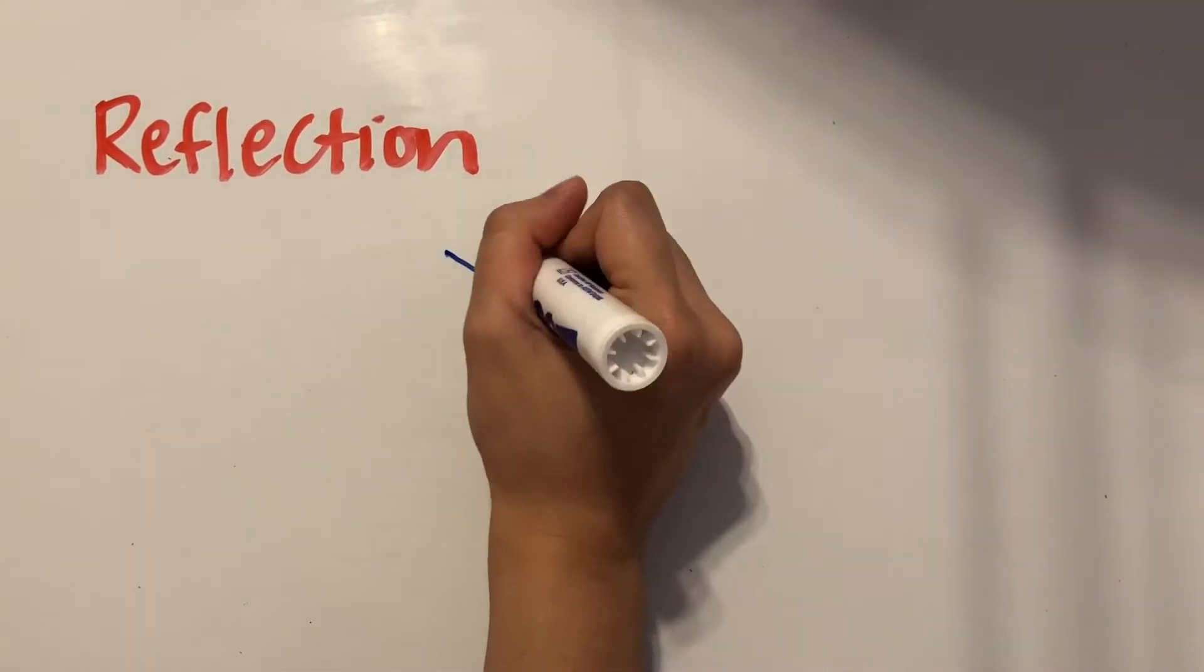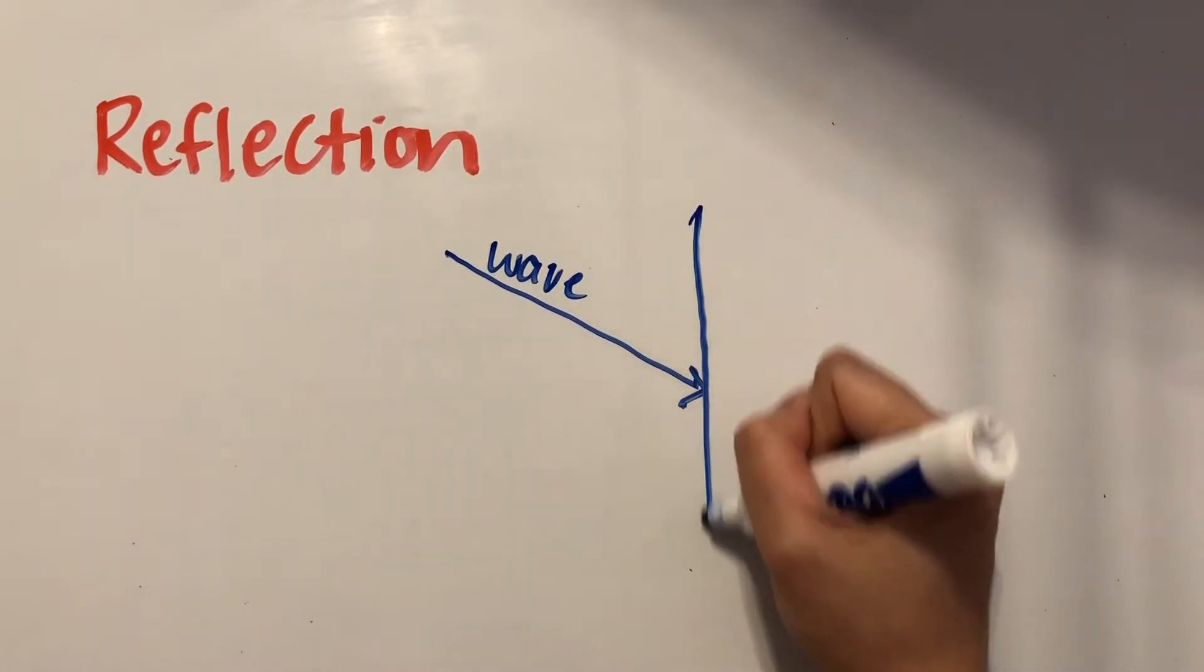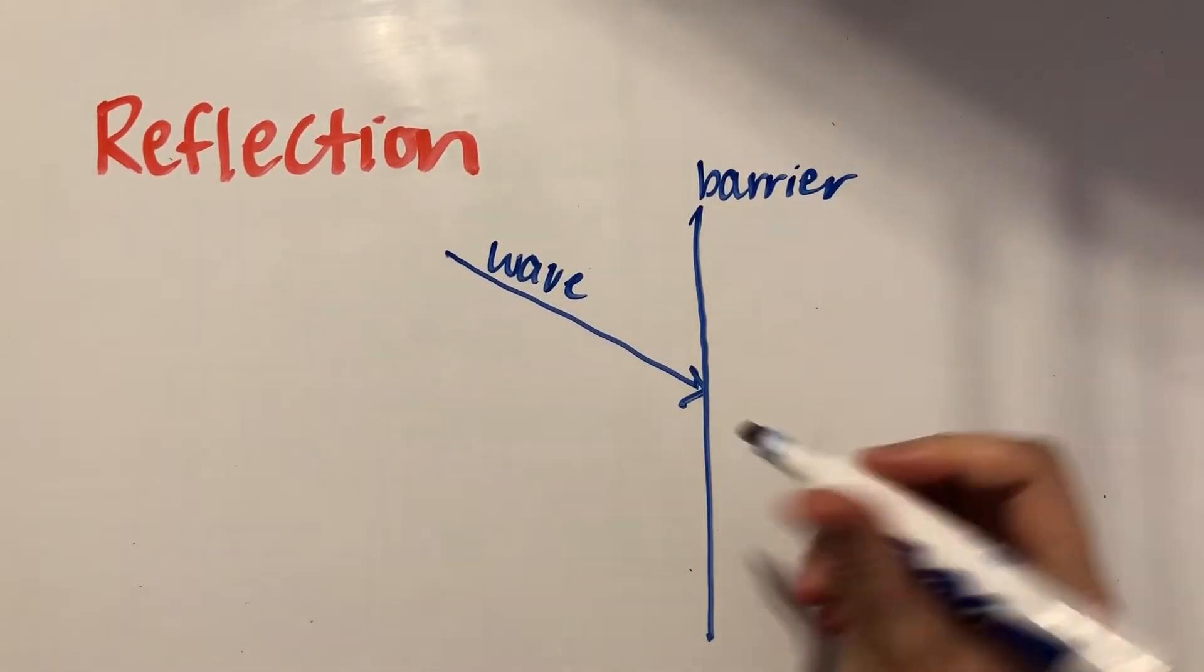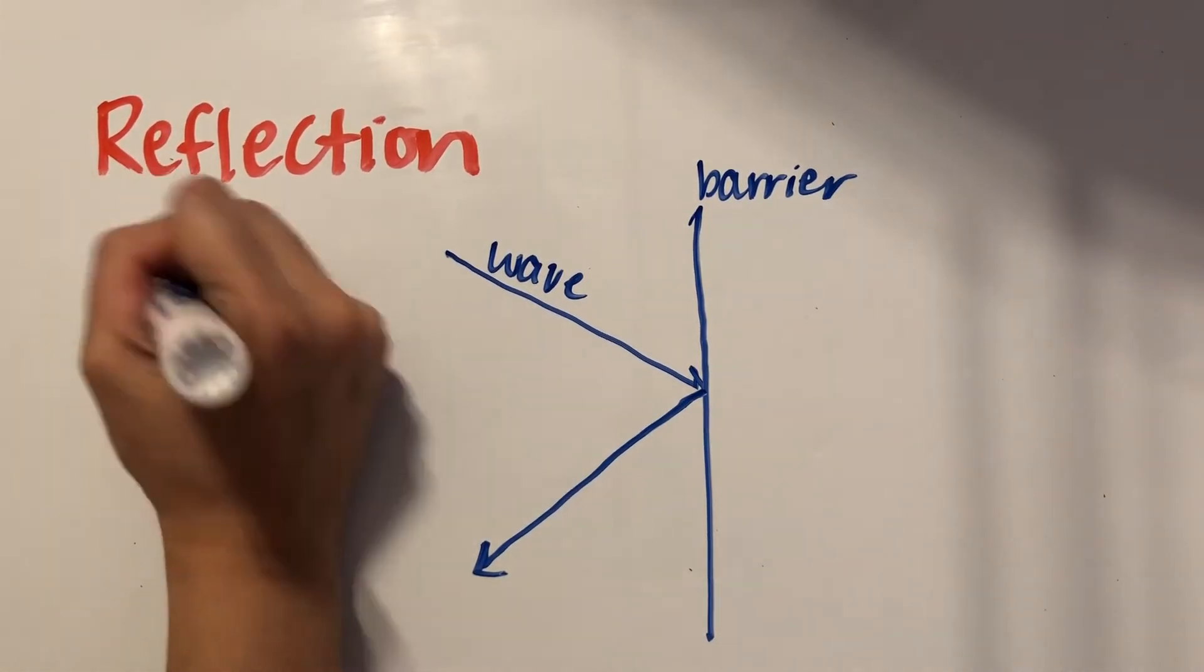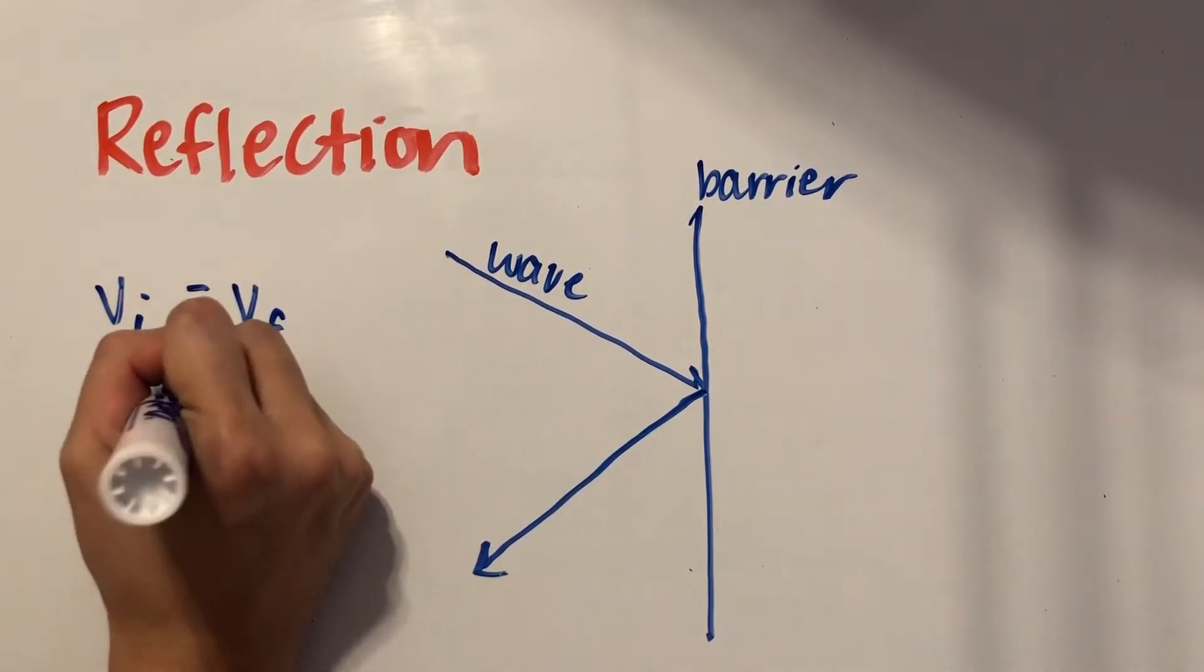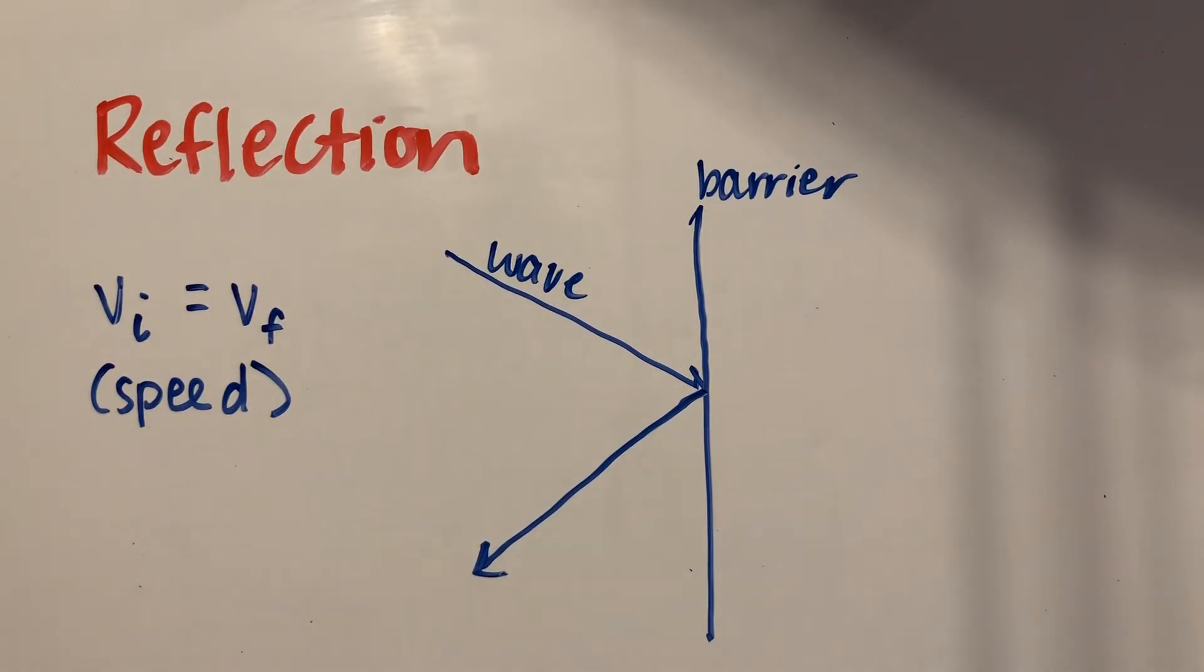Reflection is when a wave encounters a barrier and then starts moving in the opposite direction because it gets cast back. This means that the barrier is rigid so the wave can't travel through it. The resulting reflected wave travels at the same speed as the original wave.